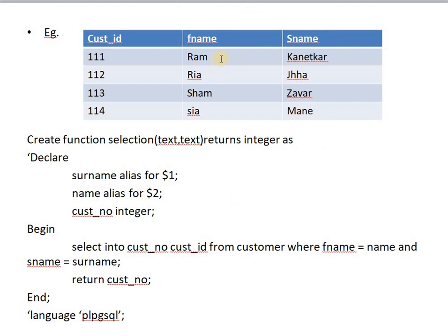Now let's see an example. We have a customer table in the database with three fields: customer_id, first name (fname), and surname (sname). The table has four records with customer IDs 111, 112, 113, and 114, which are primary keys. We need to write a function that fetches the customer ID when the user provides a first name and surname.